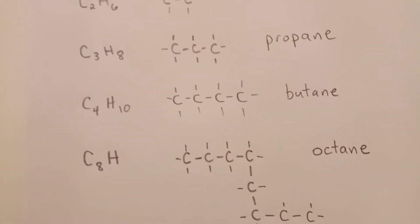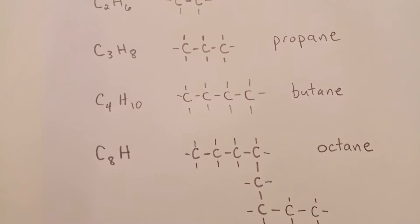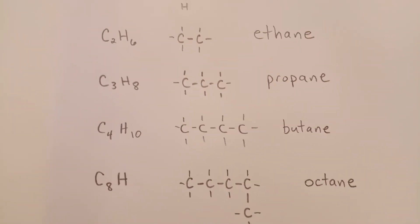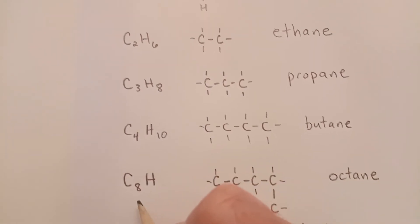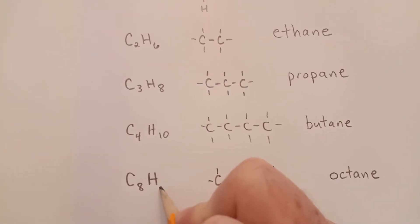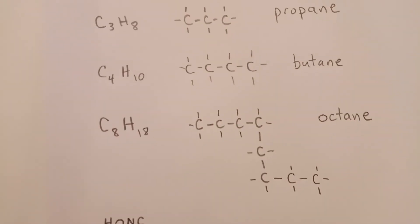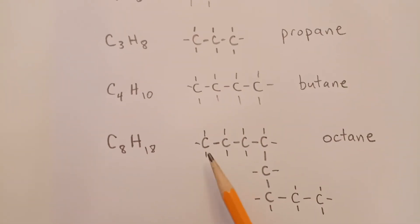And C8 is octane. All single bonds. What's going to be the number of hydrogens? If it's an alkane, it's 2n+2. That's 16. Two times n plus two more. 16 plus two is 18. And alkane is a long, or in this case, eight carbons. Count them up.